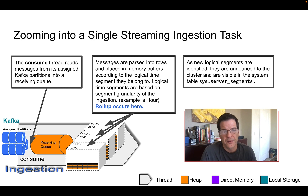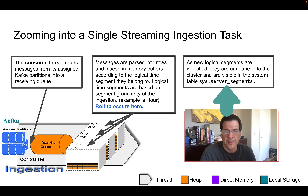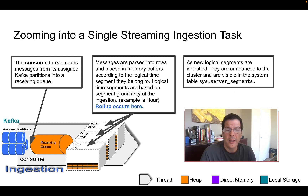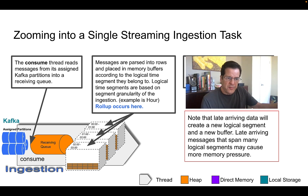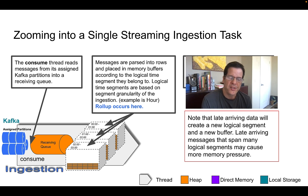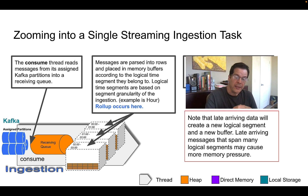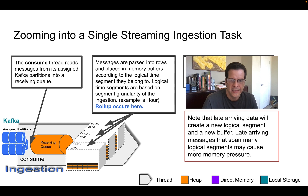You can see the real-time segments by querying the server segment system table within Druid to see which real-time segments exist and are being managed by active tasks. One thing to note is that late-arriving messages will create older buffers whenever they arrive, and therefore require more buffers at this stage — having very late messages means the span of buffers needed is much larger.